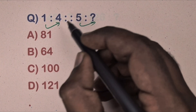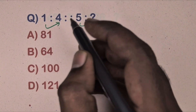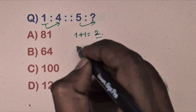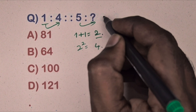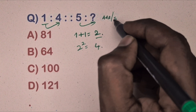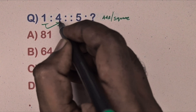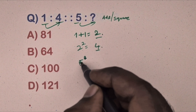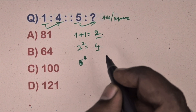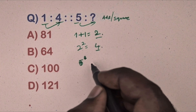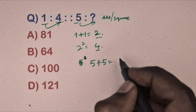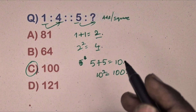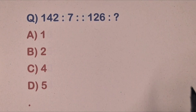Next question: one is related to four, five is related to which number. Take one: one plus one equals two, two squared equals four. This is the addition and square relation. Same way take five: double the number, five plus five equals ten, ten squared equals 100. So 100 is the correct answer.